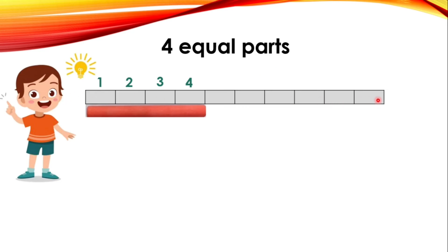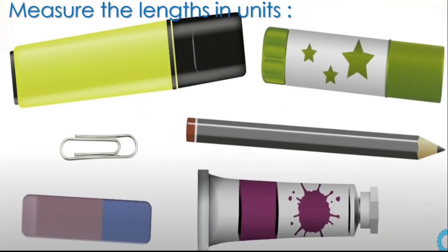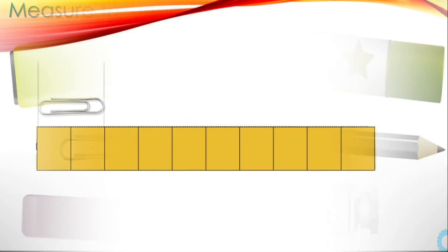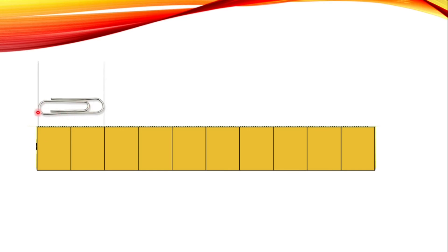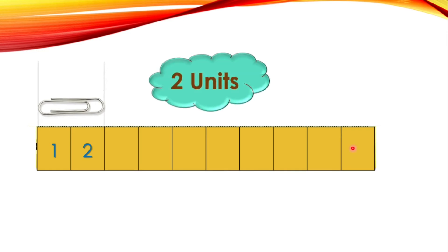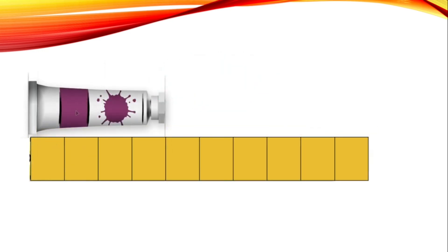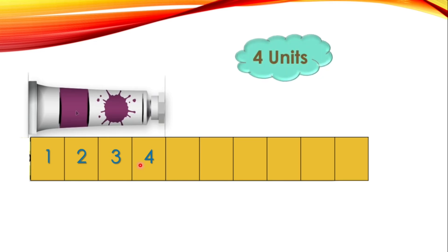Let's measure some more objects using this method — measuring length in units. Using a paper strip divided into equal numbered parts: the U-clip measures two units. Next, the color tube measures four units.